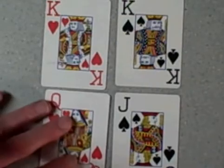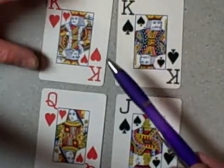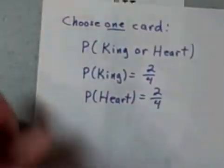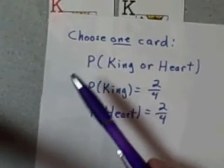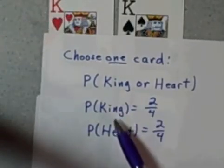So that formula doesn't work. Now, why in the world doesn't it work? And hopefully you see why it doesn't work is because we have this card right here, this king of hearts, which not only is a king, it is also a heart. So when I have counted these probabilities, I have counted this king of hearts twice, once as a king and once as a heart.